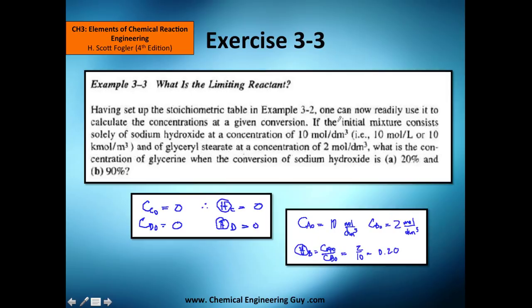If the initial mixture consists of only sodium hydroxide at this concentration, so CA initial concentration is this value, and the one of glyceryl stearate, which is B, is 2. What is the concentration of glycerin when the conversion of sodium hydroxide is A 20% and B 90%? First things first, I got the concentrations of my reactants. The concentration of my products are 0.